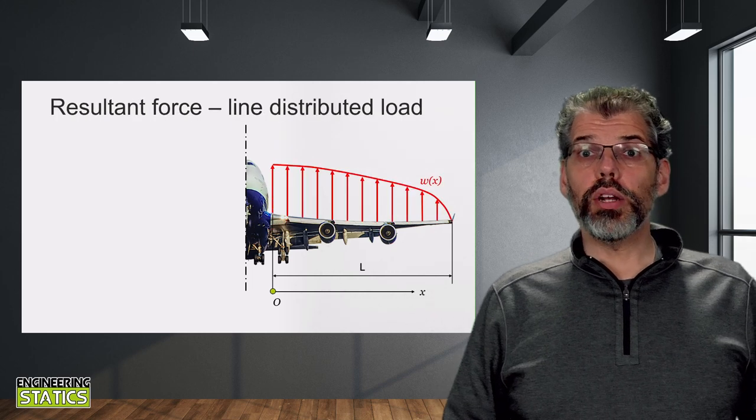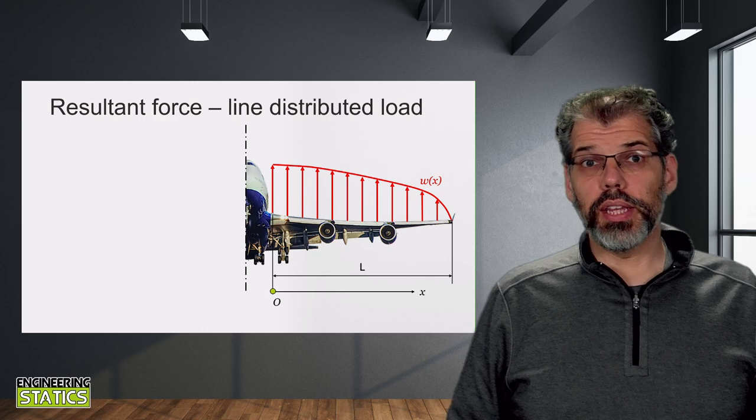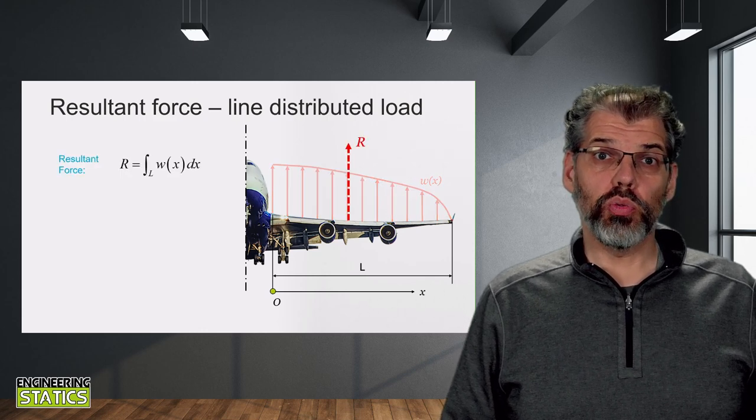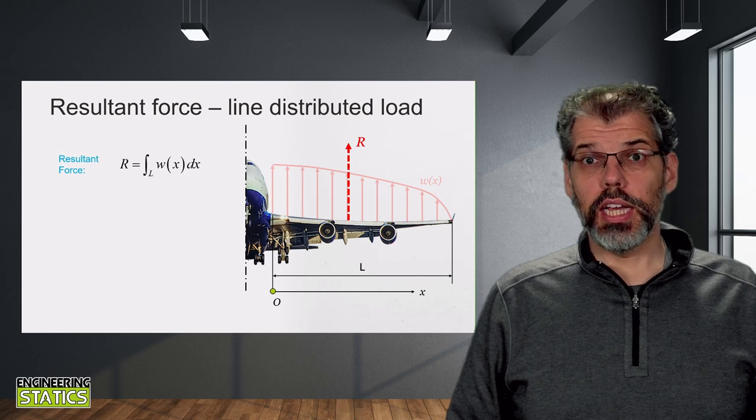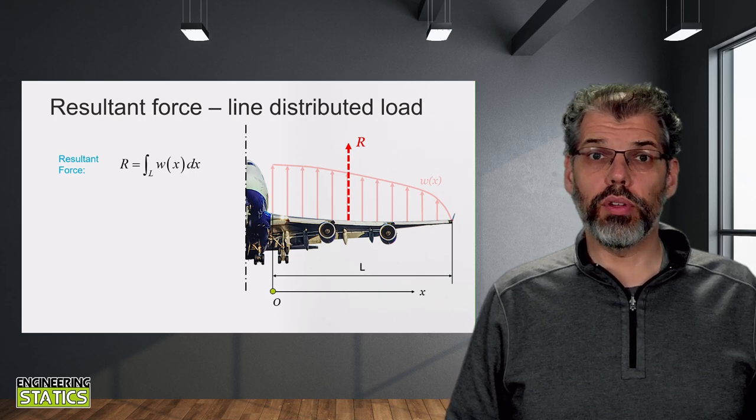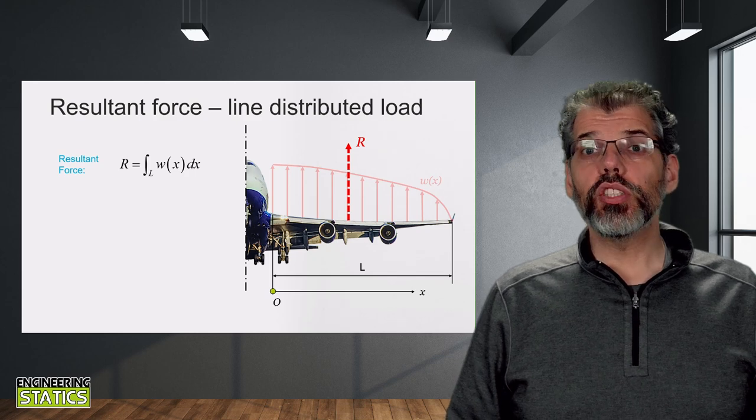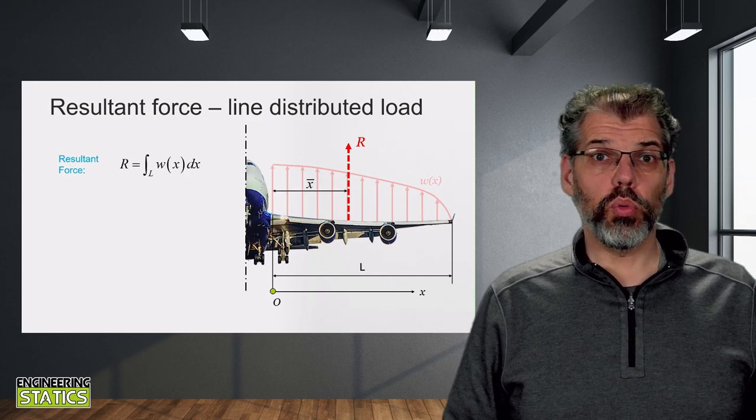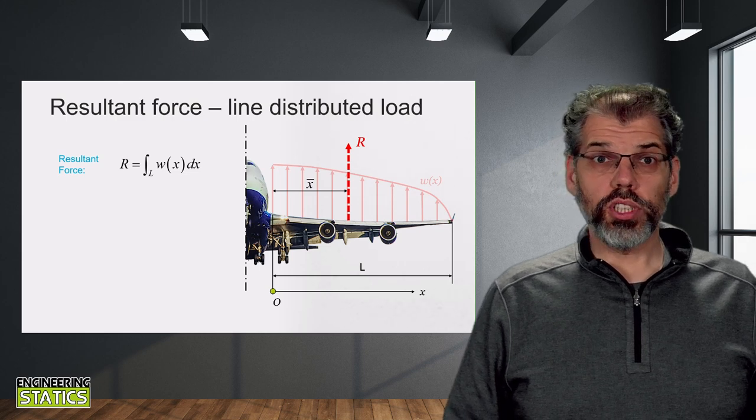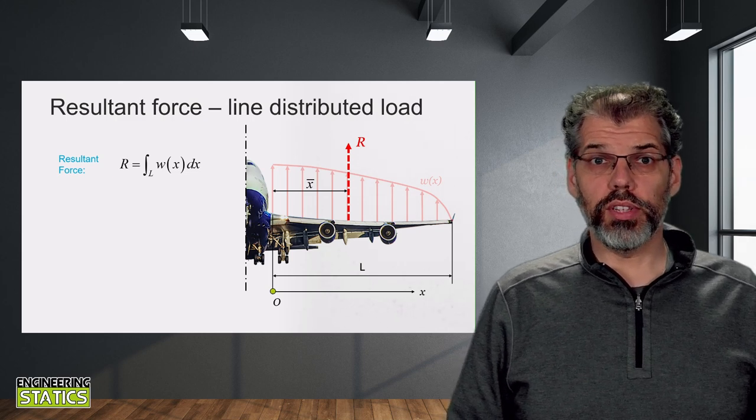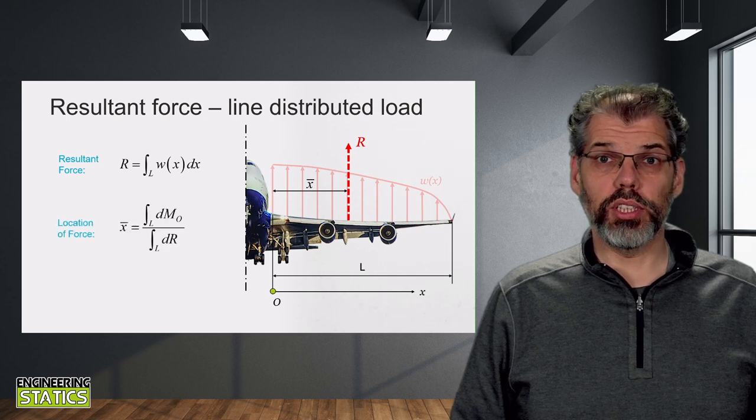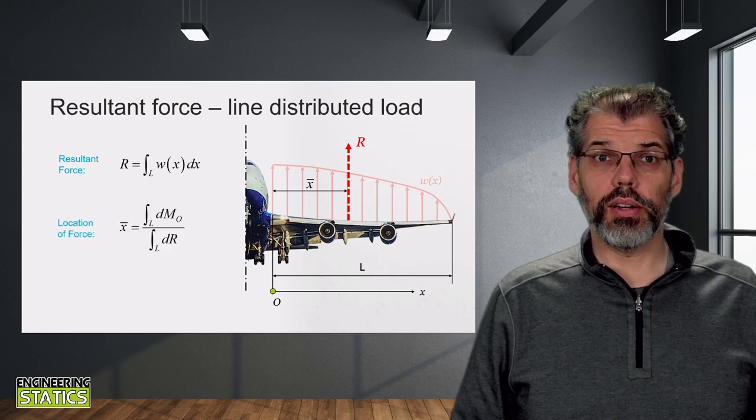Alternatively, we could also analyze the system to find the equivalent resultant force. The magnitude of the force will be the same as in the previous analysis. It will be given by the integral of the distributed line load over the span of the wing. However, this force will be offset from the root of the wing by a distance x-bar. As this force system will be equivalent to the previous force couple system, then R times x-bar will equal to m sub-zero that we previously calculated.